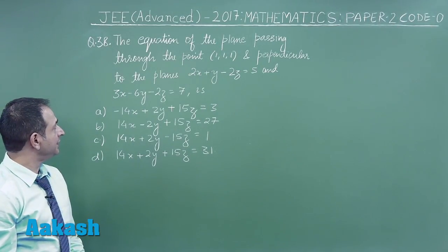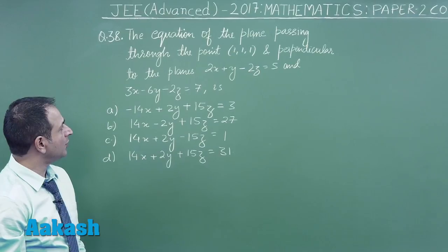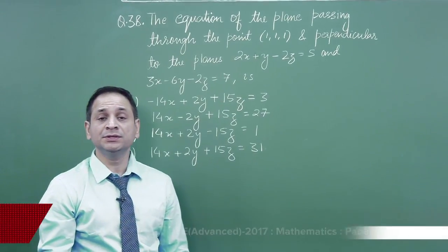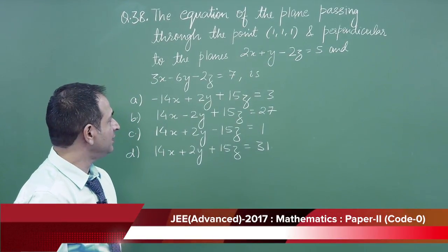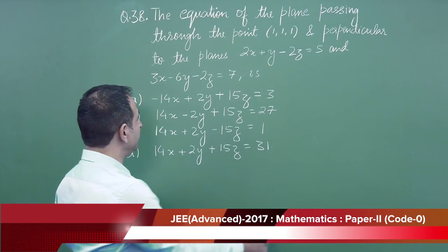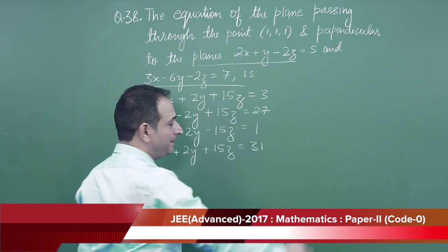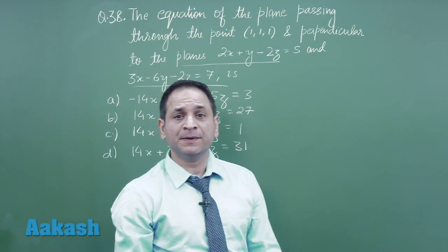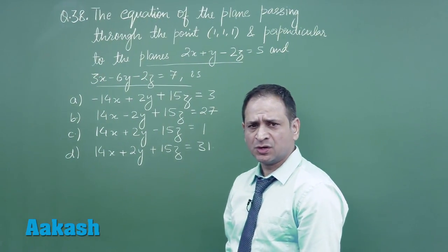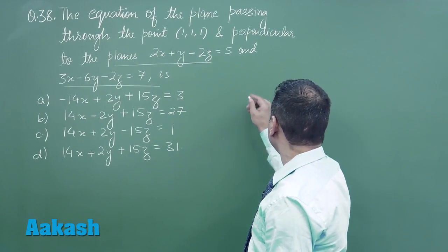Let us move on to question number 38. It says that the equation of the plane passing through the point (1,1,1) and perpendicular to the planes - these are the two planes - and the plane which we have to find out is perpendicular to the two planes. So how to get it? How do we do it?